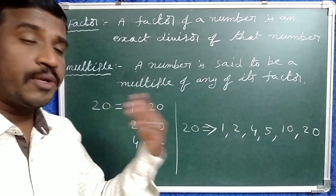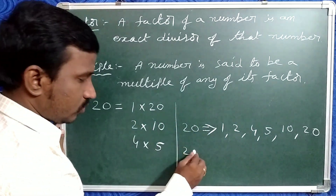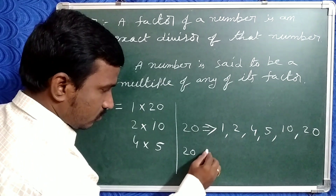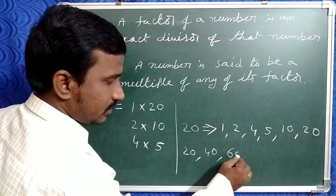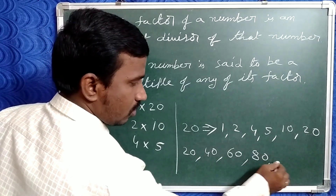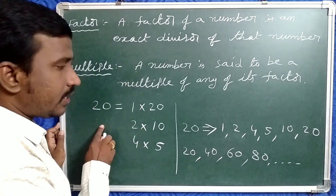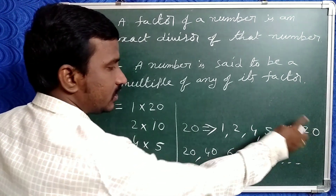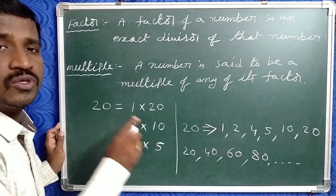Now what are the multiples of 20? 20 into 1 is 20, 20 into 2 is 40, 20 into 3 is 60, 20 into 4 is 80, and so on. These are all multiples of 20.